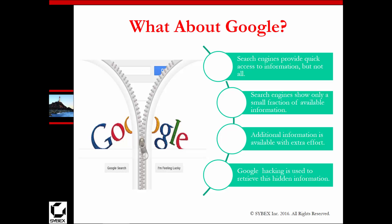My favorite is you can always Google things. Google does a lot of web indexing, and you can use its search engine to provide quick access to information — maybe not everything, but a lot. A lot of companies are making more items accessible to Google just because they want more recognition. Google hacking is used to retrieve information that's hidden, and when we get into website hacking, we're going to cover more about Google hacking.